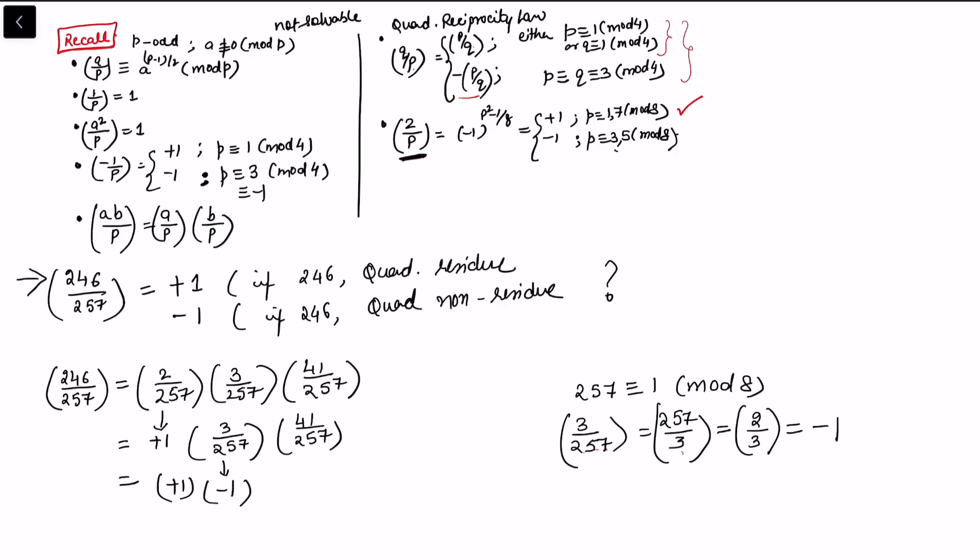Let's see what is (41/257). To find (41/257), we can again replace it with (257/41) by the same reasoning. 257 is congruent to 11 mod 41. Now again replace (41/11) as this satisfies the given condition—41 is congruent to 1 mod 4 because 40 is divisible by 4.